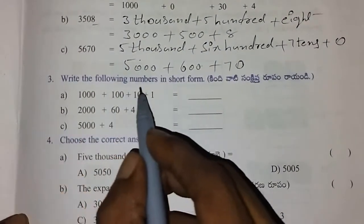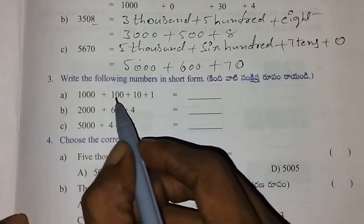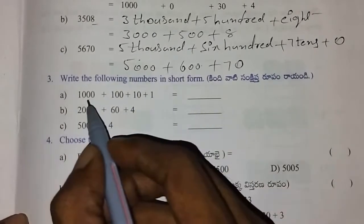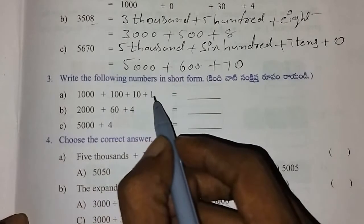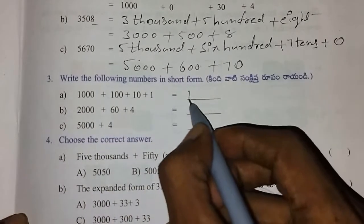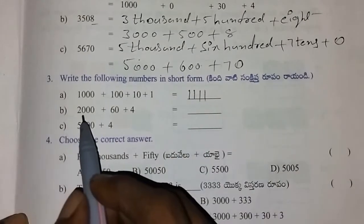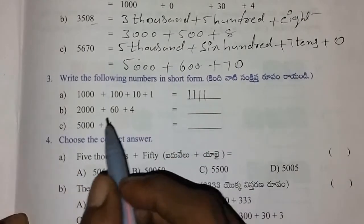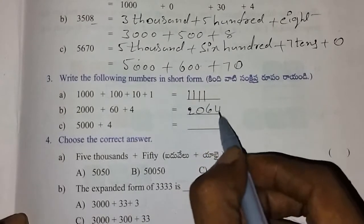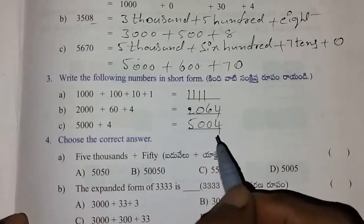Write the following numbers in short form. 1,000 plus 100 plus 10 plus 1 equals 1,111. Next: 2,000 plus 64 equals 2,064. Next: 5,000 plus 4 equals 5,004.